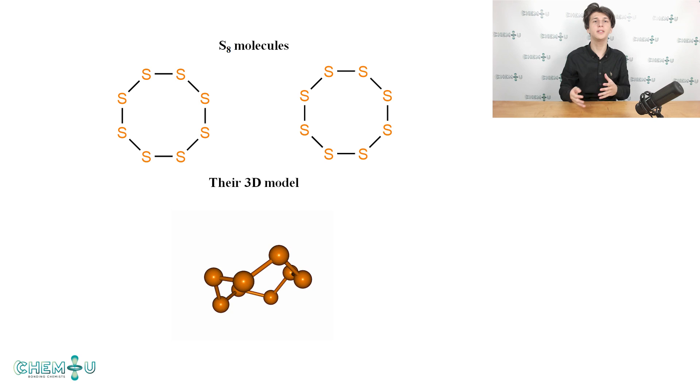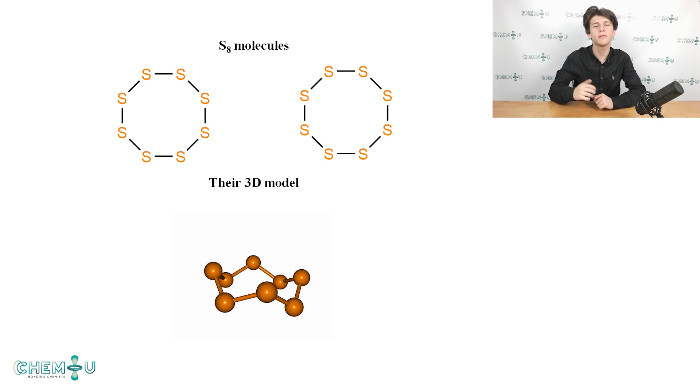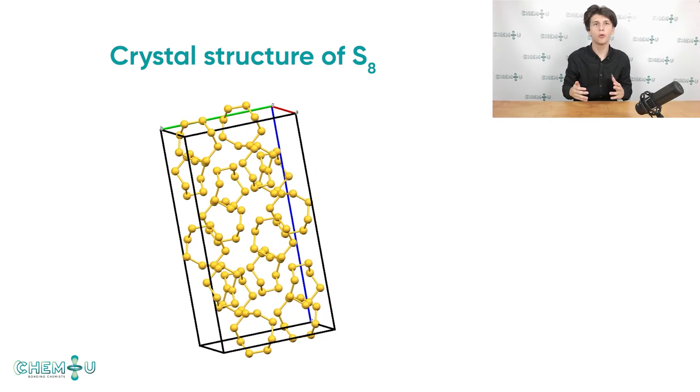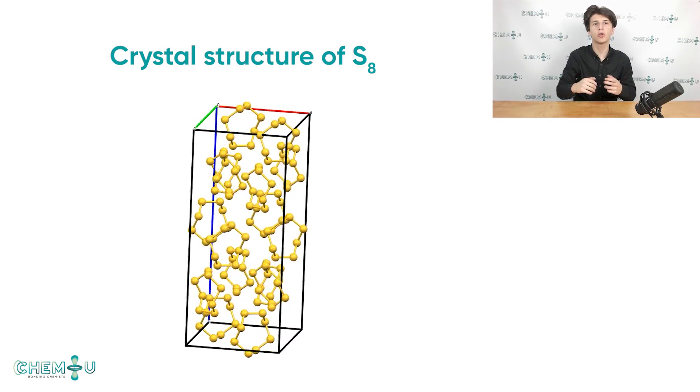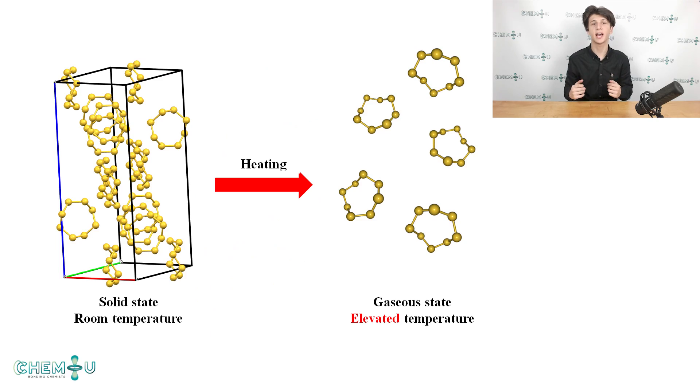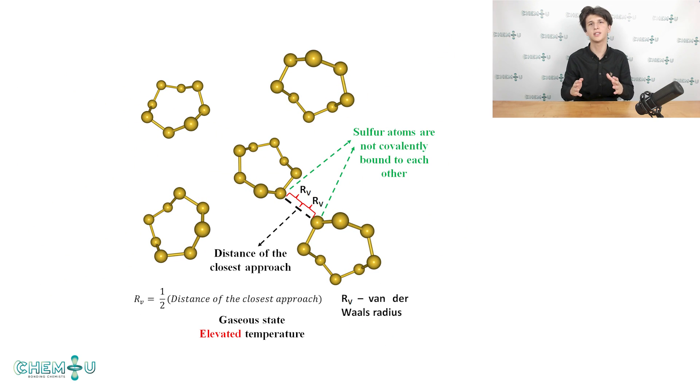Now on the slide you can see two S8 molecules and their 3D model that somehow resembles a crown. At room temperature, these molecules form a solid substance. Here is the corresponding crystal structure. However, we can easily evaporate it obtaining the gas phase. The S8 molecules move rapidly in gas and repel each other due to electrostatic forces between their electron shells. The half of the distance of the closest approach of two S atoms that belong to different molecules is their van der Waals radius. On the slide it is colored red and denoted as Rv.